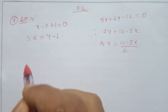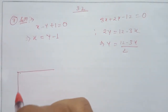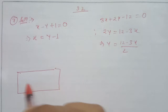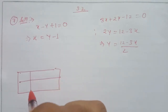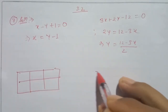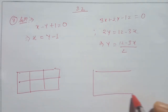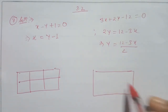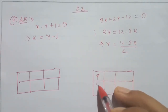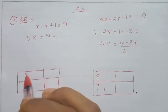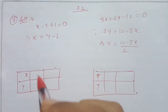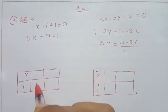Therefore, we can see that a table is created. In this example, y equals 2 from the table. If you use x or y, the y equals 1.